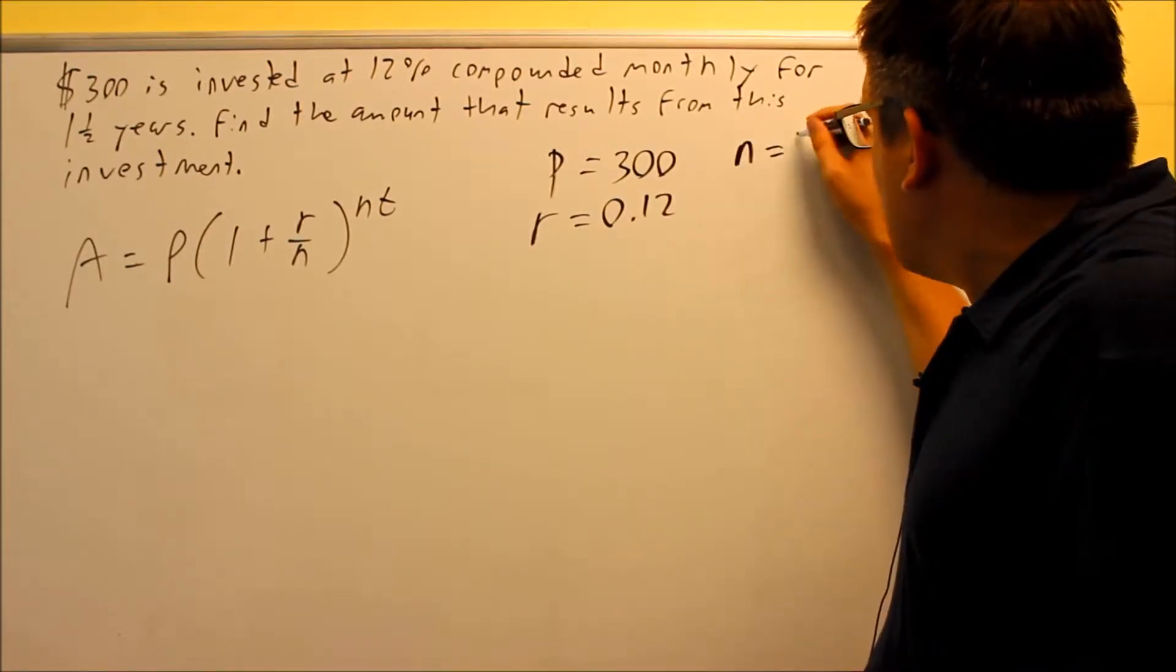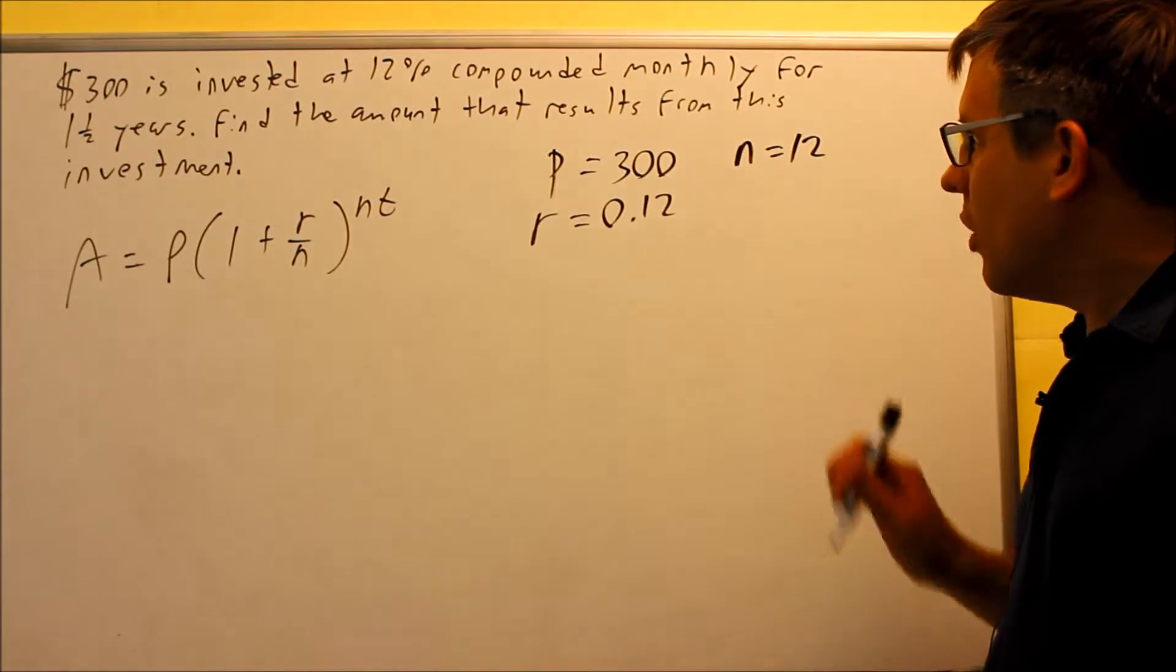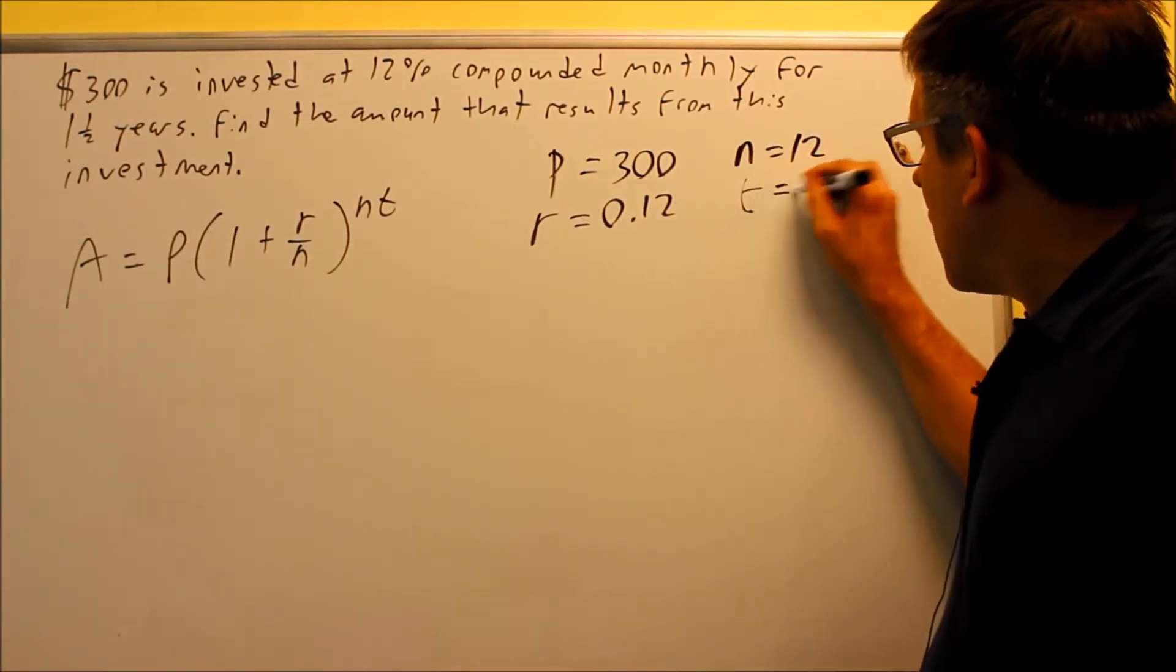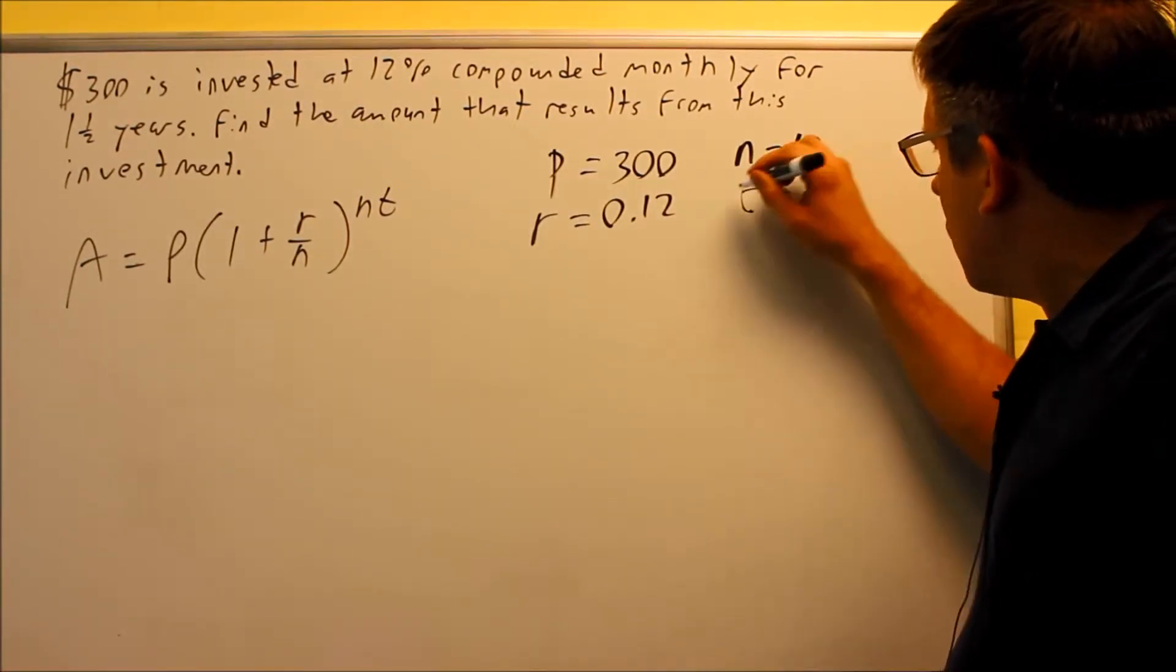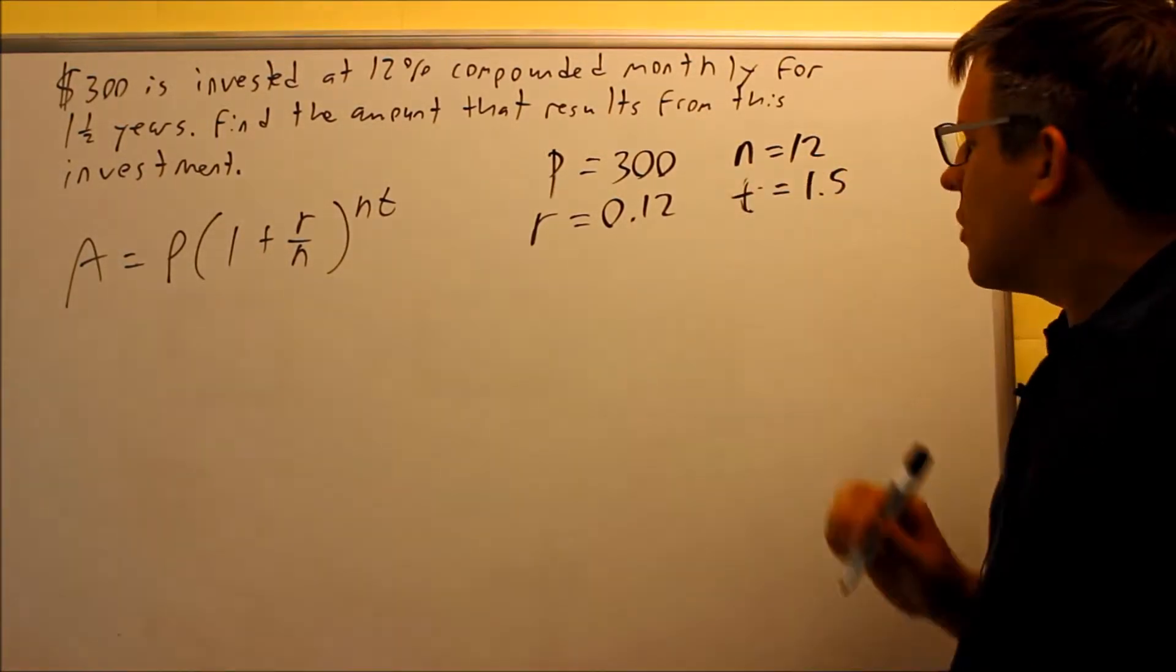Your N is going to be 12 because that's how many times it's compounded per year. And your T, your time, has to be in terms of years, so it's going to be 1.5. One and a half would be that as a decimal.